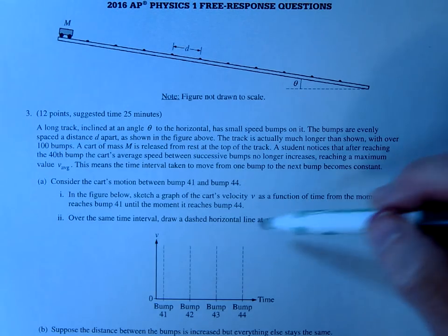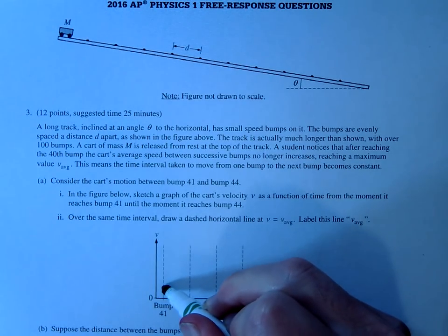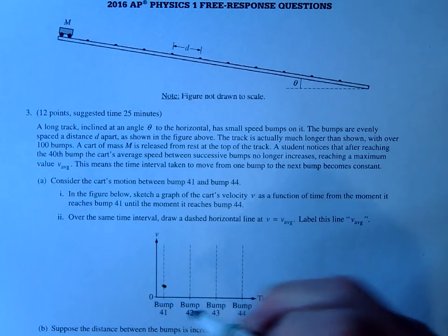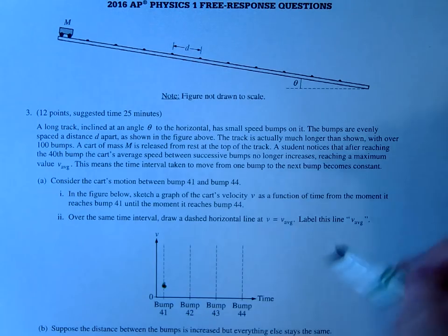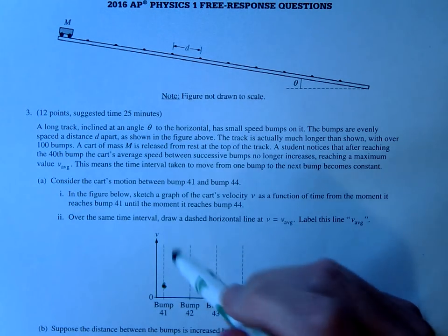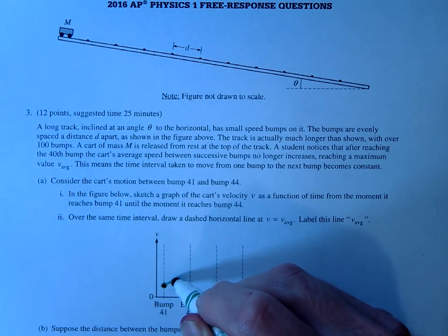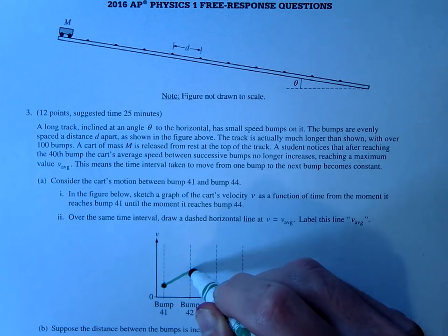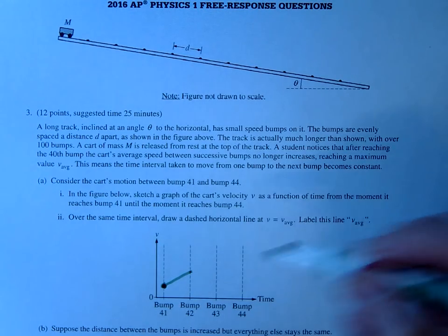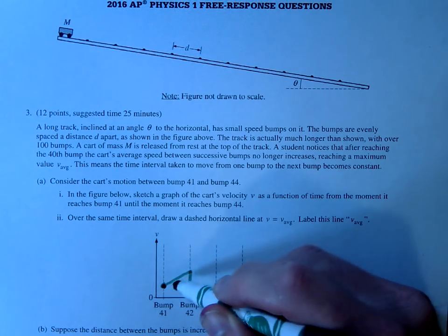The first question wants you to sketch out what that would look like. So I'm just gonna start here at bump 41. There is still an acceleration between bumps with an mg sin θ component, so this is gonna come up like this—it's gonna accelerate. Then when it hits the bump it's gonna slow it down a little bit, it'll drop back down.